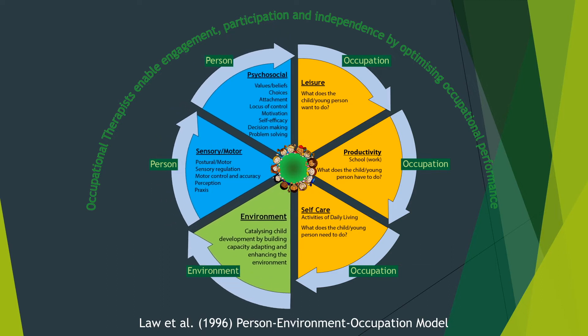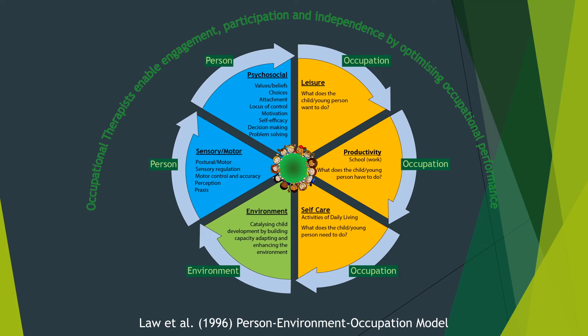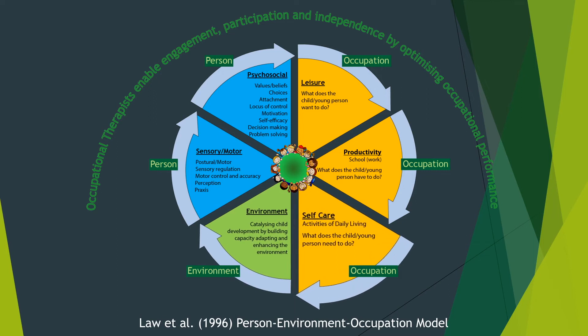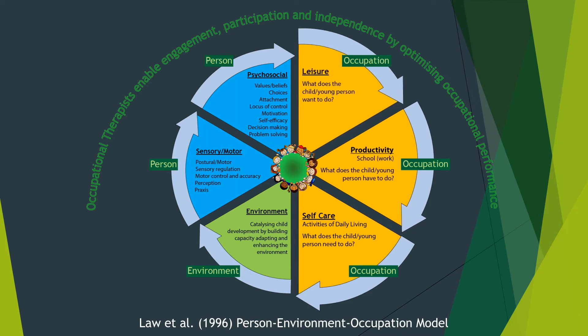Within the environment section, we consider the places they live, play, and develop in, and the people in that environment — mums, dads, and teachers, for instance. We then split the occupation section into three parts: the tasks the child needs to do, they have to do, and they want to do.